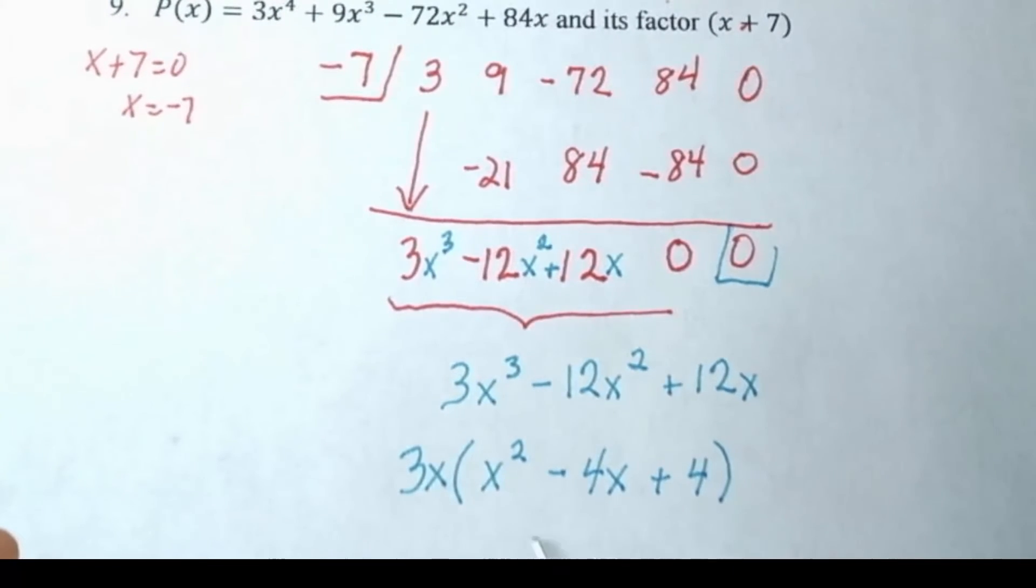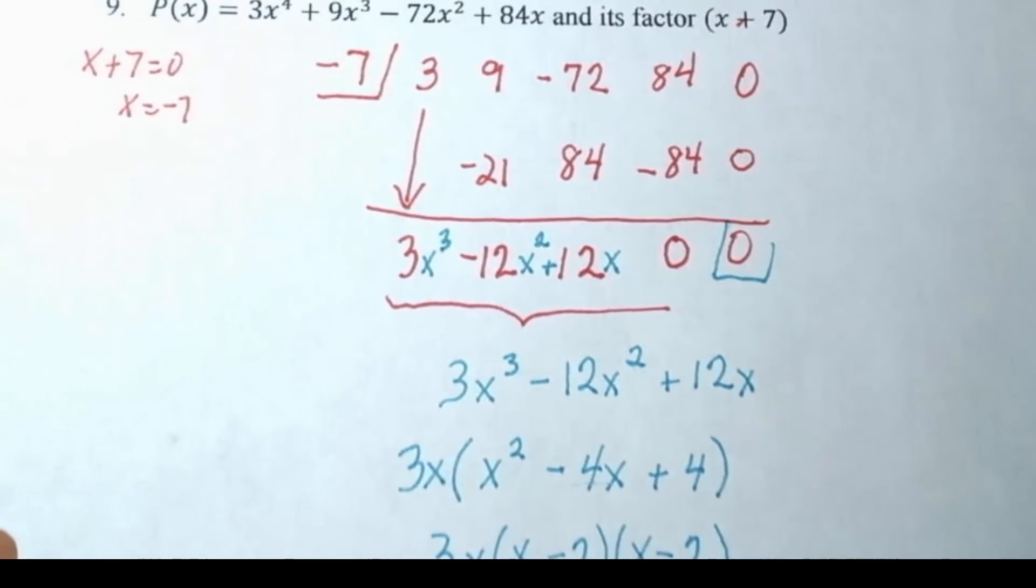Hopefully you recognize that perfect square trinomial there. So this is x minus 2 times x minus 2 for this quadratic.